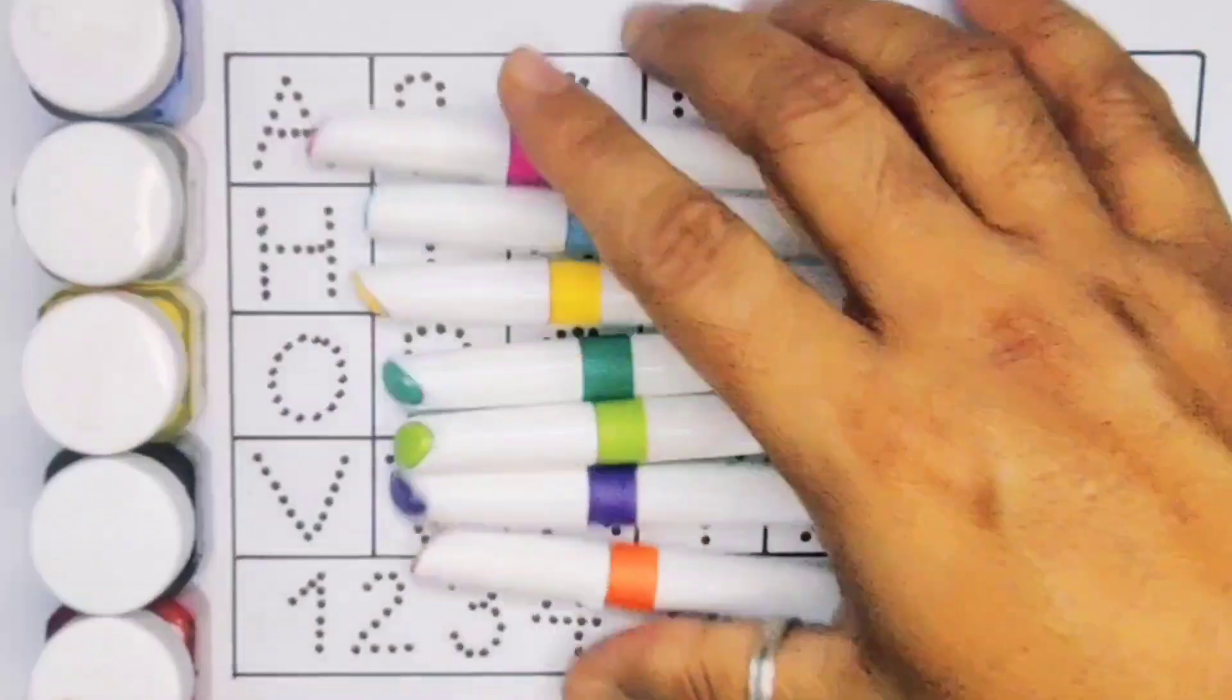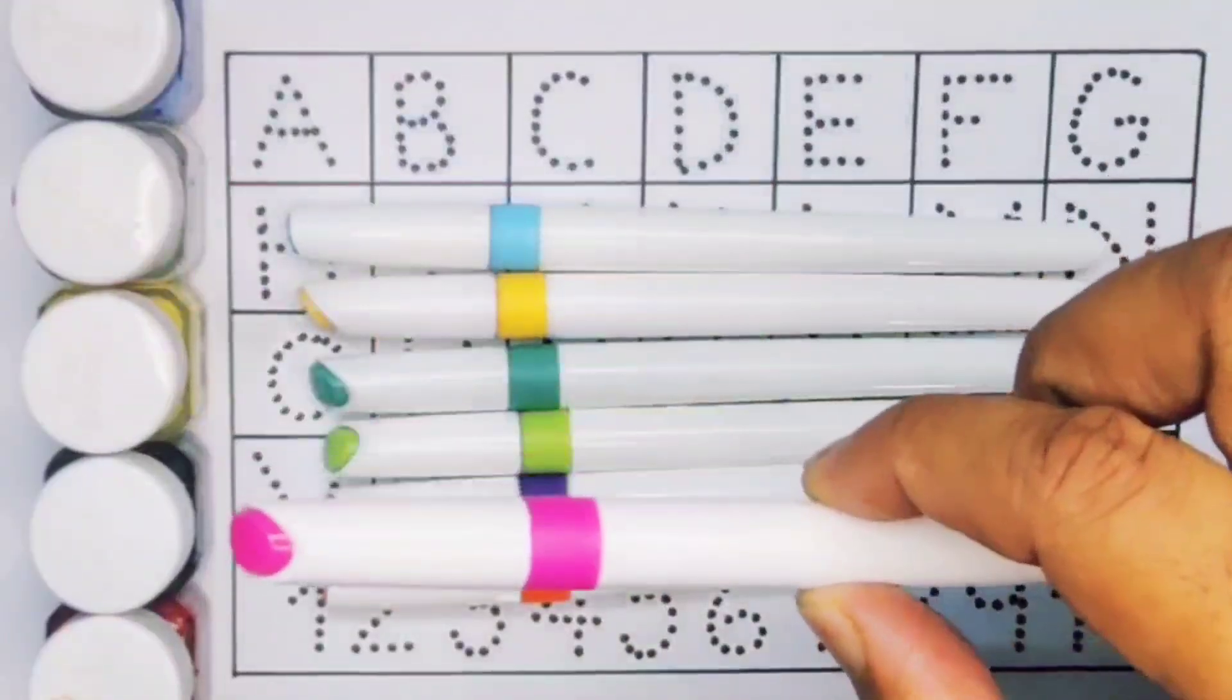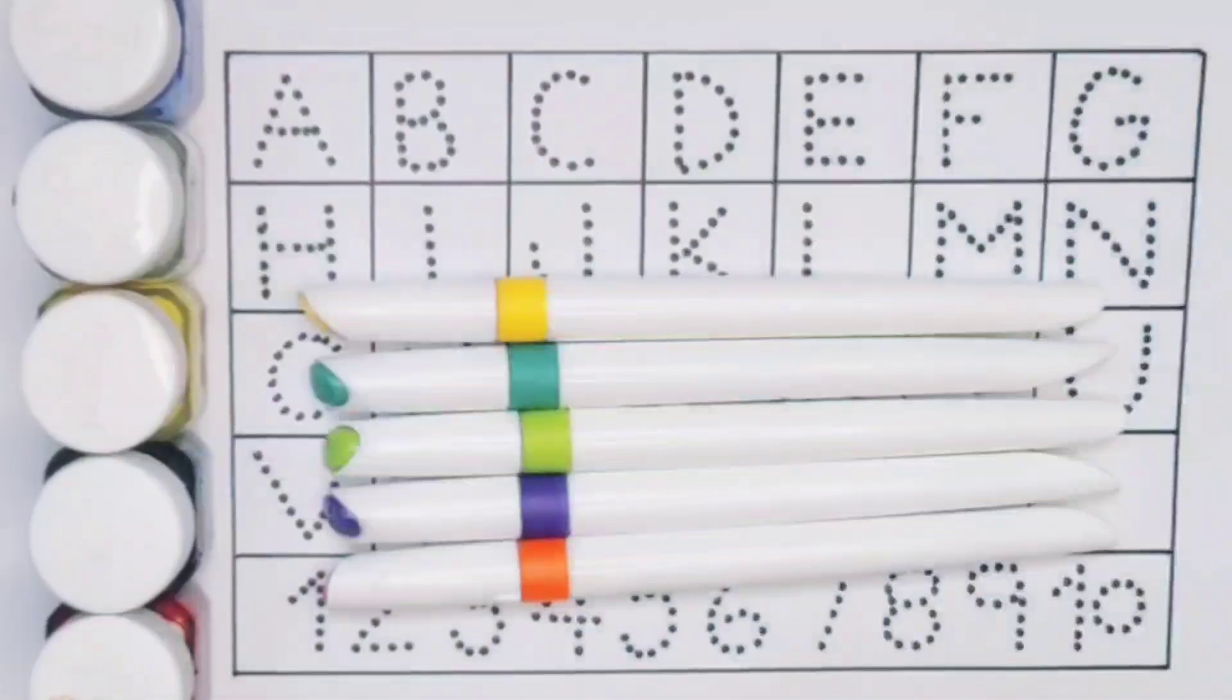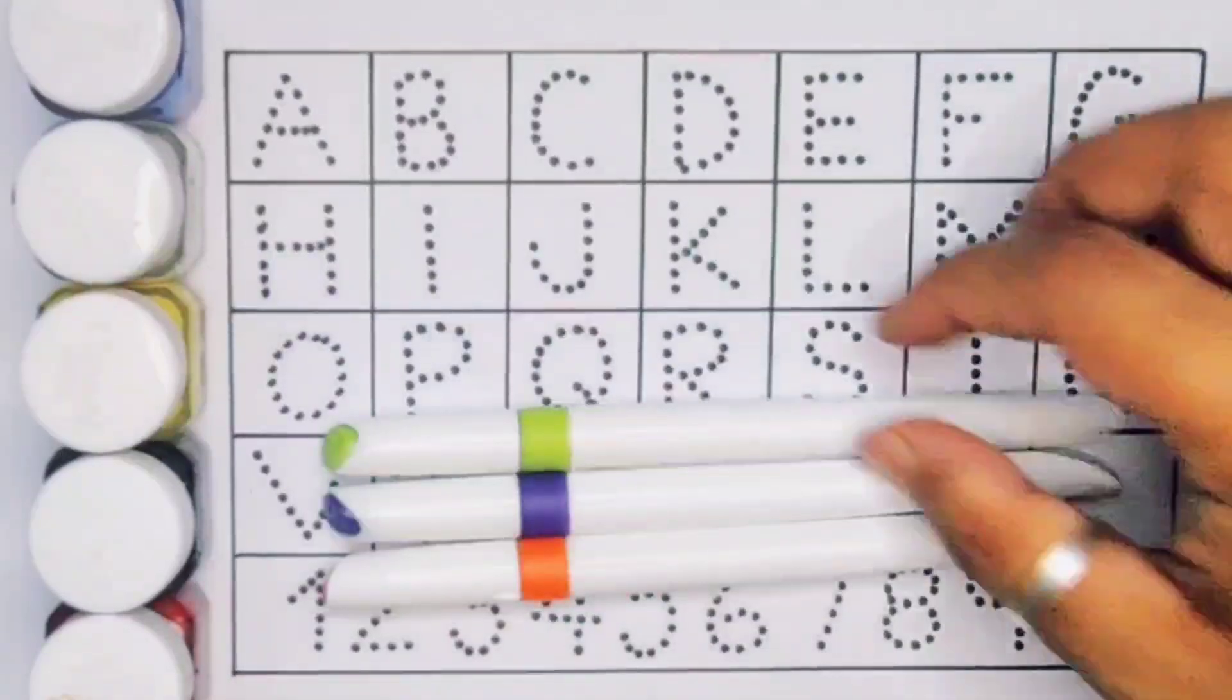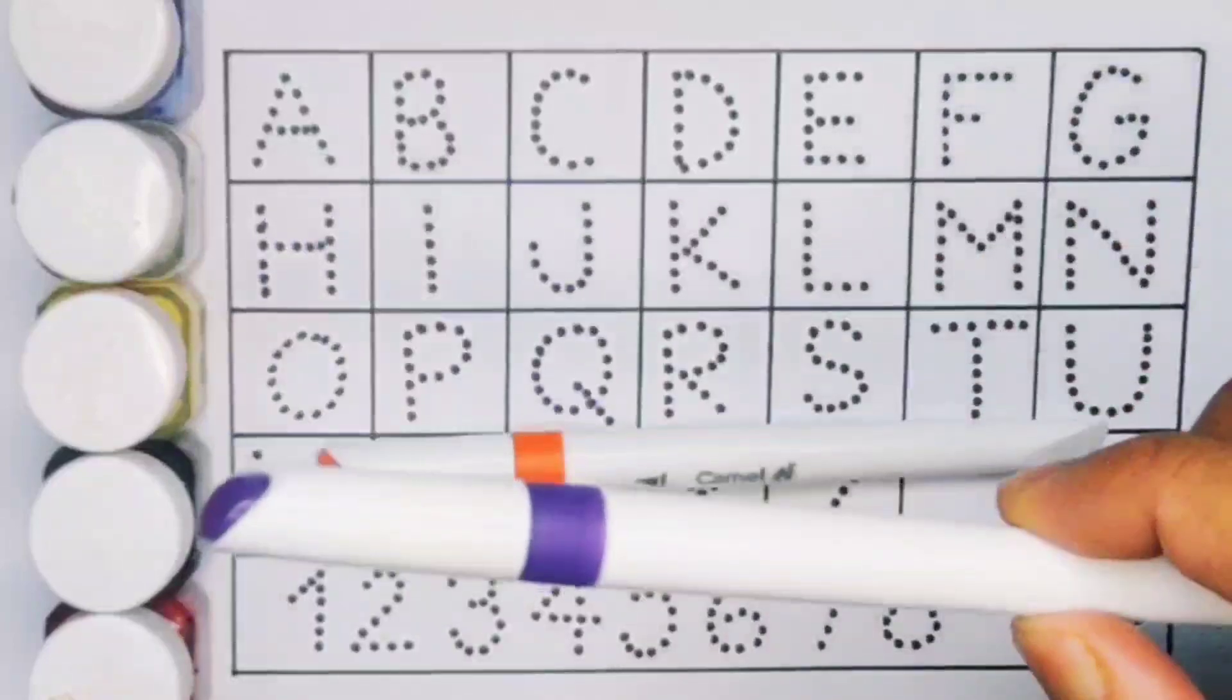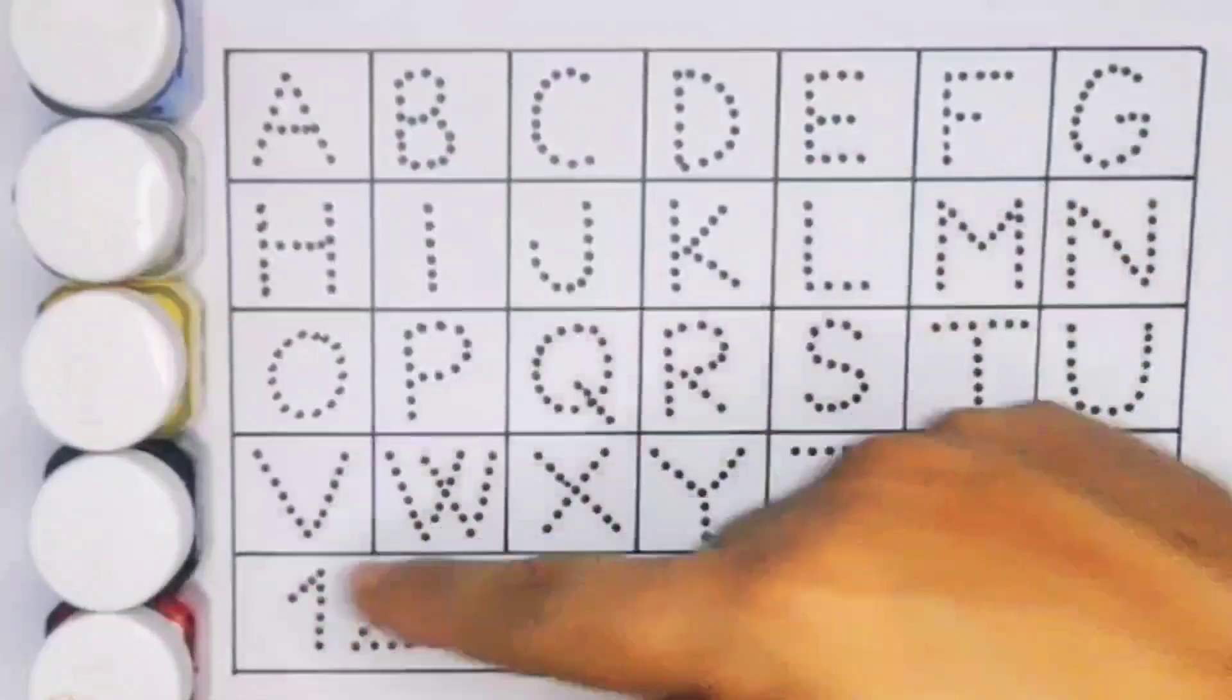Hello kids, welcome to my new video. First we're going to know the colors: pink, light blue, yellow, green, light green, purple, and orange. Now let's learn the alphabet A to Z and numbers counting 1 to 10.